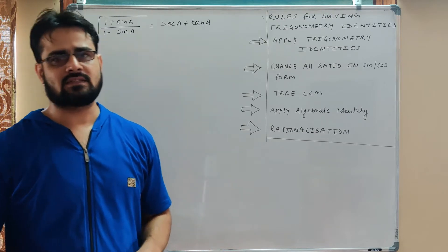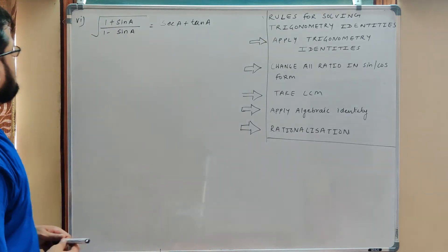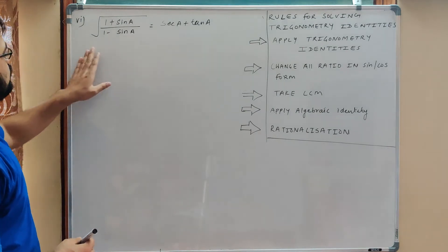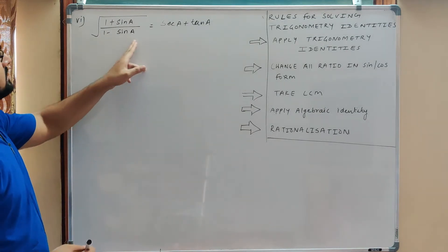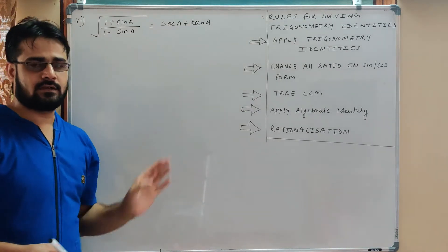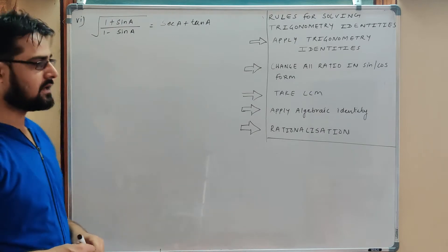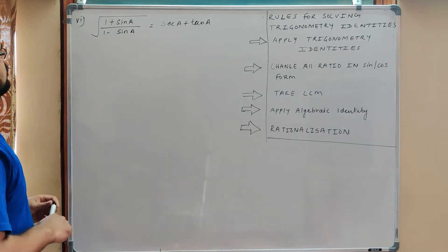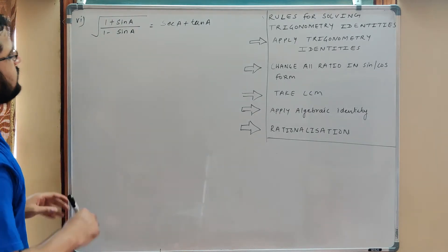So students, in this sequence, we have a question that is root 1 plus sin A upon 1 minus sin A equals to sin A plus tan A. This is the 6th part of question number 5 of exercise 8.4.